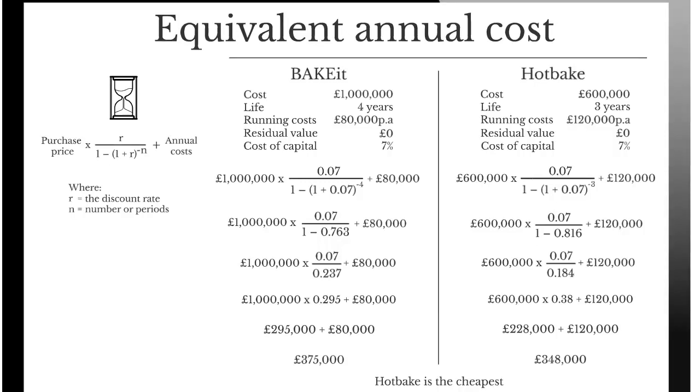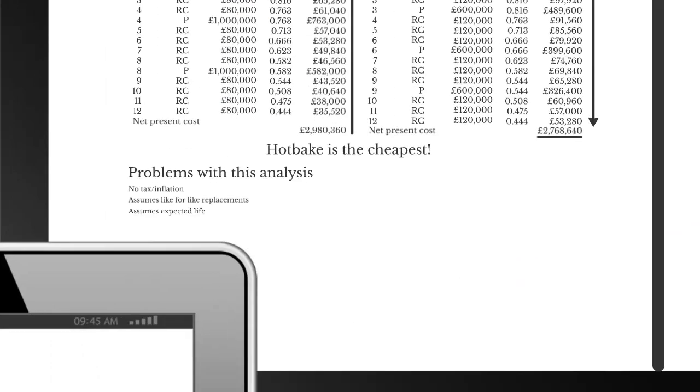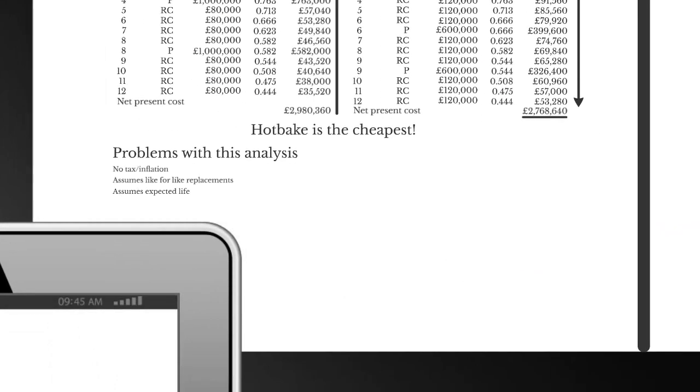Just as it was before, the Hot Bake is the cheapest. It's the cheapest using the equivalent annual costs and it was the cheapest using the lowest common multiple method. That is a far quicker way of calculating. Unless the question is specifically telling you to use a particular method, if you are just told to find out which one is the cheapest on a per annum basis, then the equivalent annual cost is the quicker method to use.